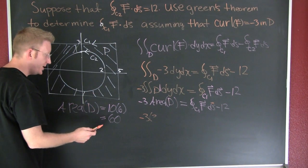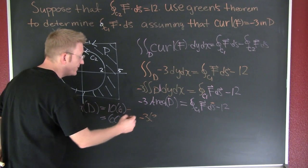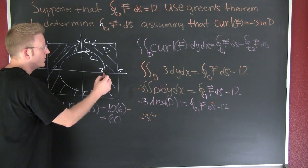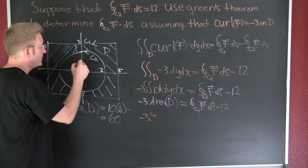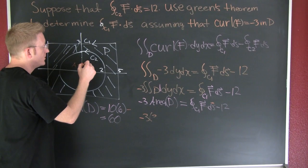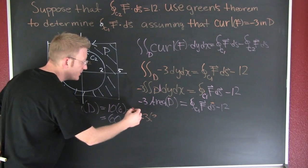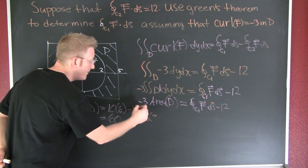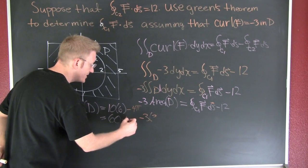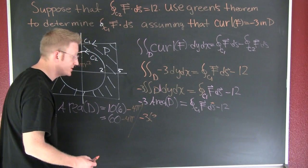So this is going to be the area of the rectangle minus the area of that circle. The area of that circle, the radius is 2. Area is pi r squared. So I see this is going to be minus 4 pi. So this is 60 minus 4 pi. And that's going to be the area of my region D.